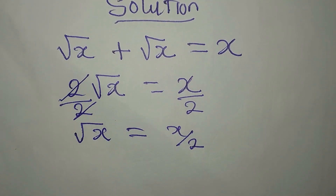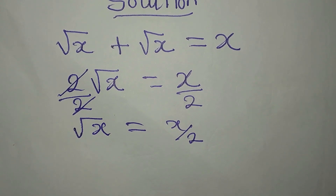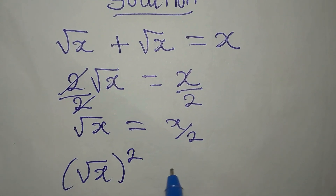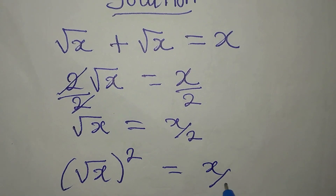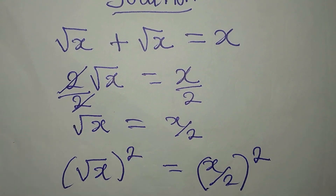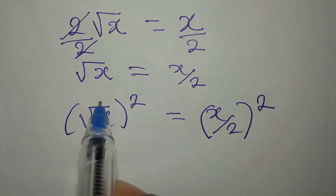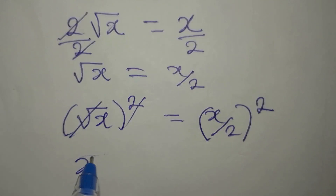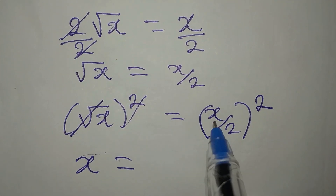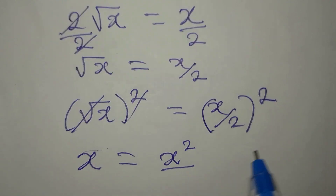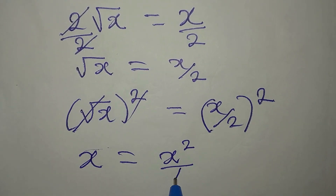Do not stop there. The next step is to square both sides. So we have square root of x raised to the power of 2, and x over 2 raised to the power of 2. This eliminates the square root, and now x is alone and it's equal to x squared over 4.